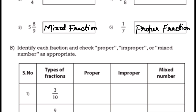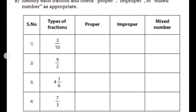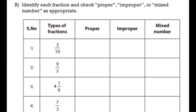Now let us do the next activity, where we have to identify each fraction and check proper, improper, or mixed as appropriate. The first fraction is 3 by 10 — a proper fraction. The second is 9 by 2 — numerator is greater than the denominator, so it is an improper fraction. The third is 4 and 1 by 6 — a whole number with a proper fraction, so it is a mixed fraction. The fourth is 7 by 3 — numerator is greater than the denominator, so it is an improper fraction.